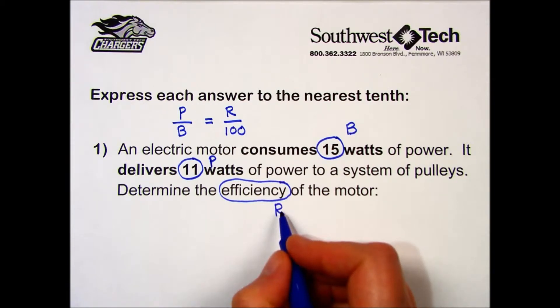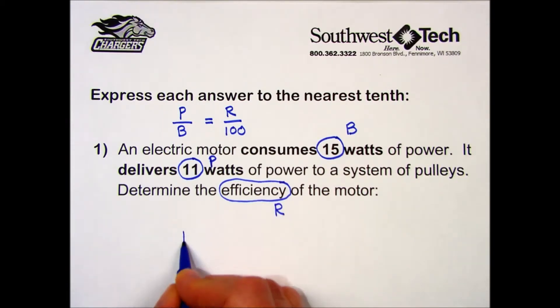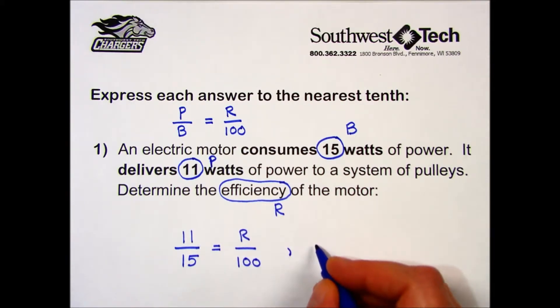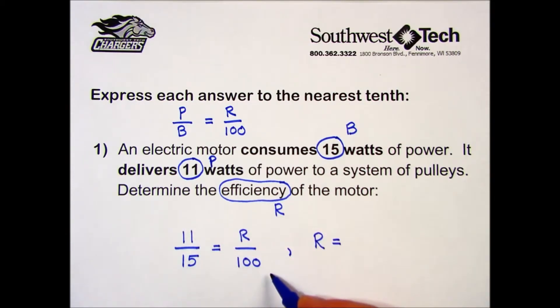Using our formula, we have part over base equals rate over 100. Using a calculator, I cross-multiply to find this rate: 11 times 100, divided by 15.